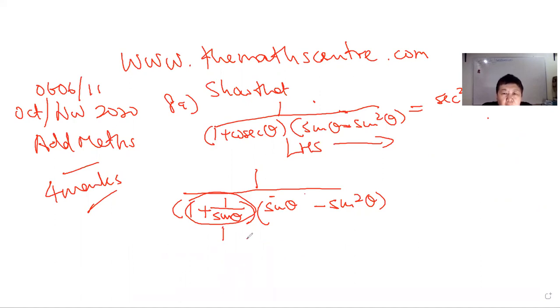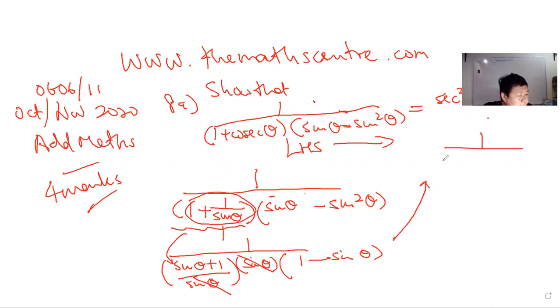So I have 1 over sin theta plus 1. I actually simplified this part. Sin theta minus sin square theta, I take out sin theta as a common factor. I'm left with 1 minus sin theta. And this will knock off. So now I am left with 1 over 1 plus sin theta times 1 minus sin theta.